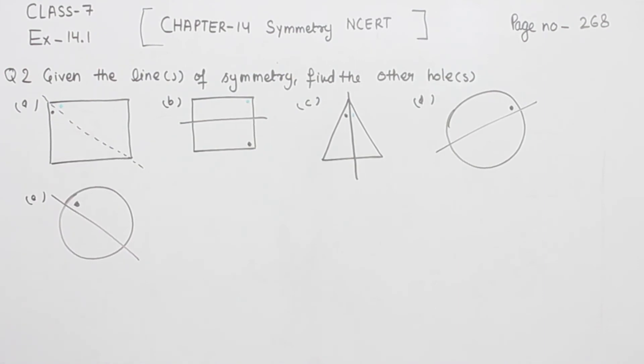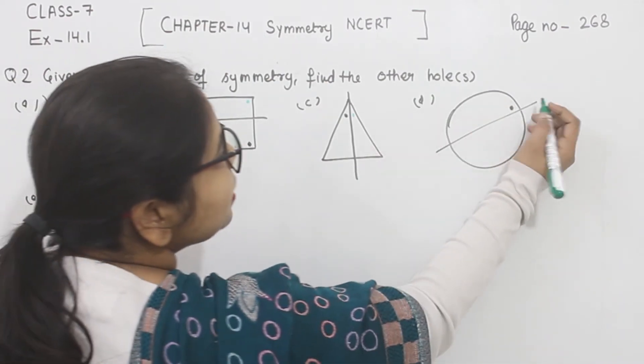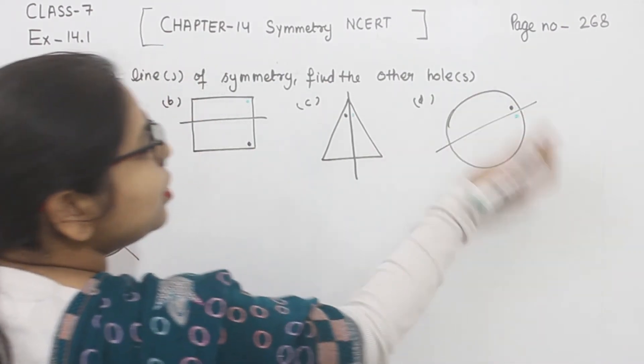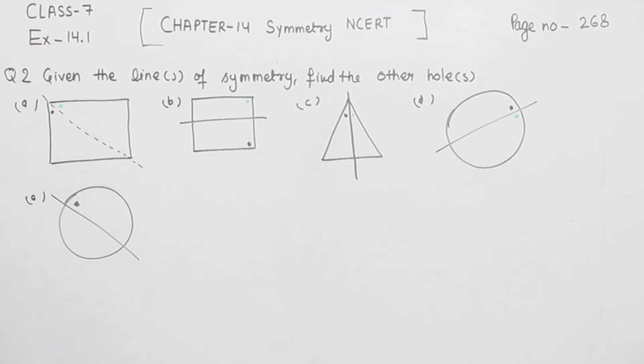Now comes part D. In part D, this is the hole we are having and the other hole will be on this side. So both the holes come on the surface of each other when we draw the line of symmetry.